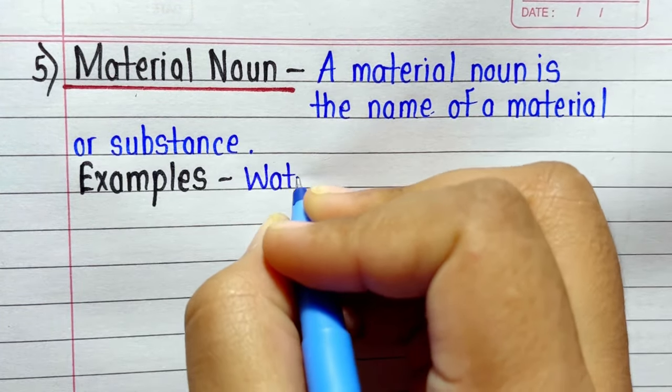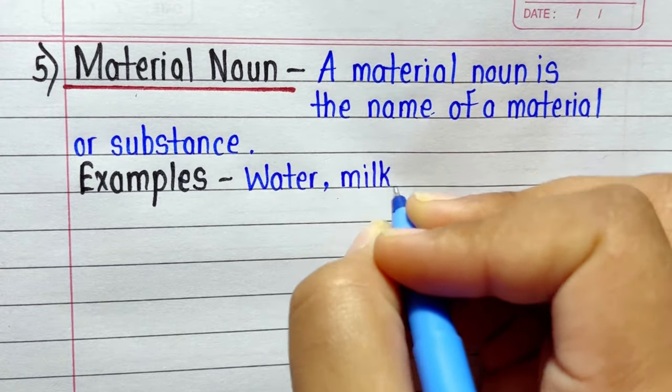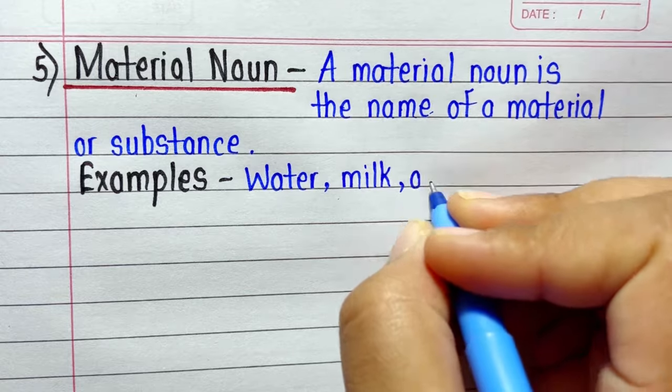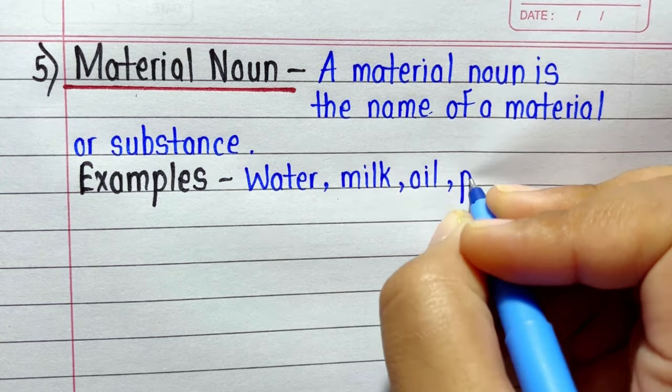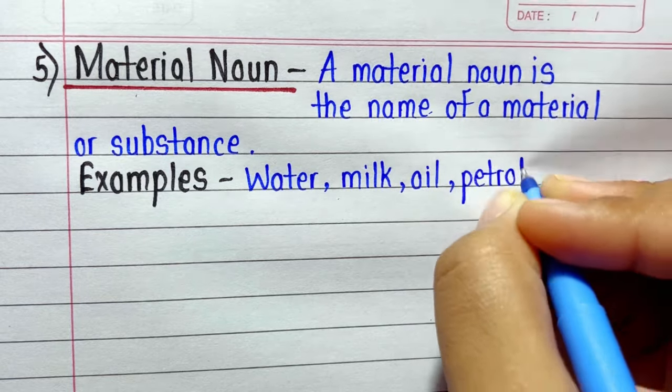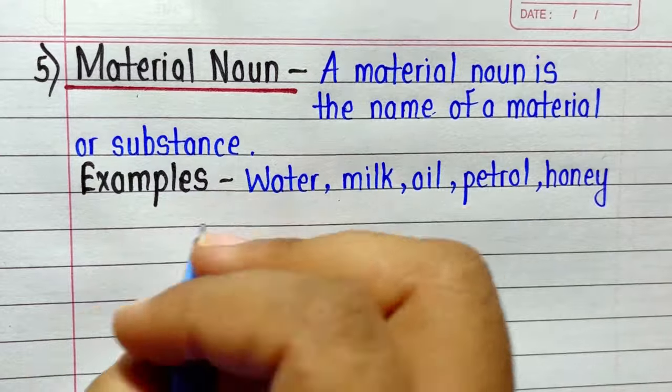Next one is Material Noun. A material noun is the name of a material or substance. Examples: water, milk, oil, petrol, honey, sugar, etc.